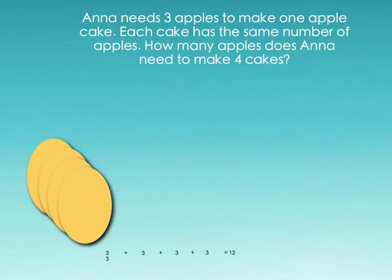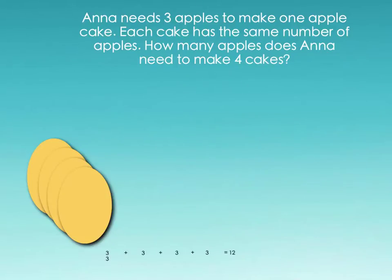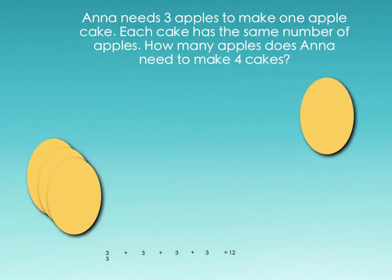Let's look at our first question. Anna needed three apples to make one apple cake. Each cake has the same number of apples. How many apples does Anna need to make four cakes? First I need to think: what is the question asking me to find? The question is asking me to find how many apples are needed to make four cakes. So I'm going to draw out my four cakes.